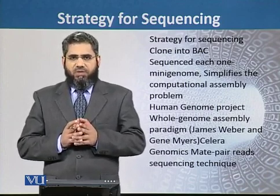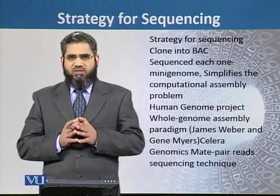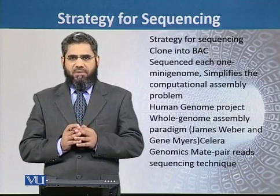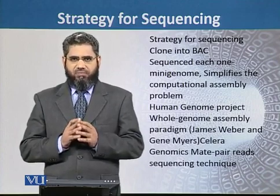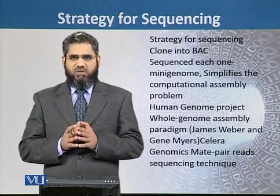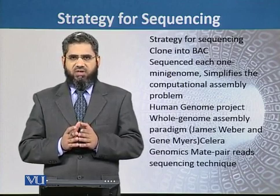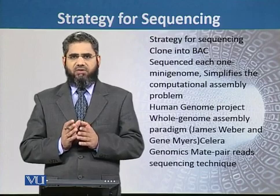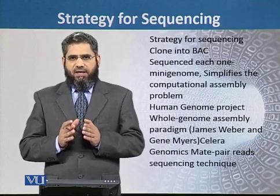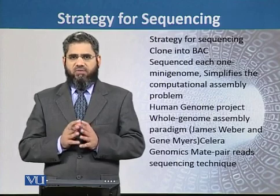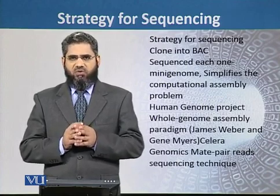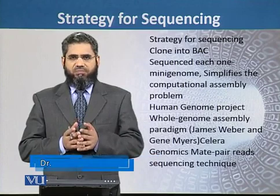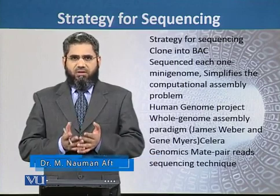For the human genome, which has a size of 3 billion base pairs, we need at least 30,000 BACs. That means 30,000 fragments of 150,000 base pairs are ligated with the BACs, and these fragments overlap with each other. For sequencing, we use each BAC, which can now be considered as a mini-genome.